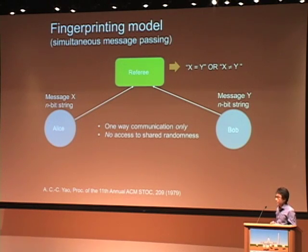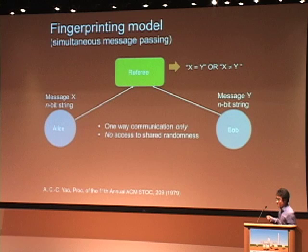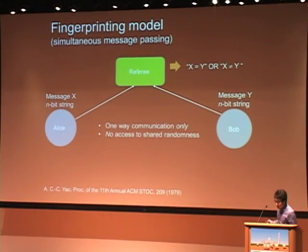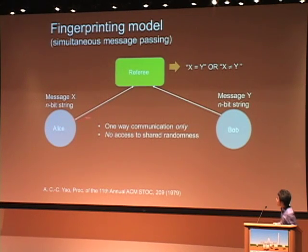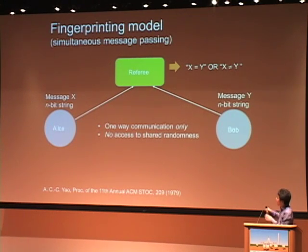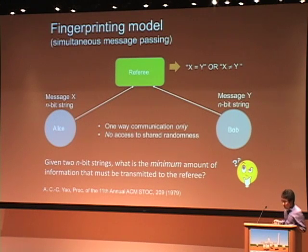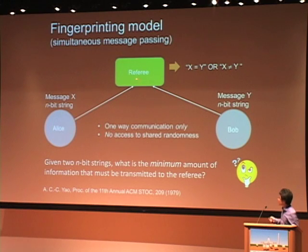In communication complexity, the famous model is the fingerprinting model proposed by Andrew Yao in 1979. I focus on the simultaneous message passing model. Suppose Alice has a message X, which is M bits, and Bob has a message Y. They both send some information about this message to a third-party referee. The task for the referee is to determine whether X equals Y or not. We only allow one-way communication — only Alice or Bob send something to the referee without anything sent back — and Alice and Bob do not have any shared randomness.